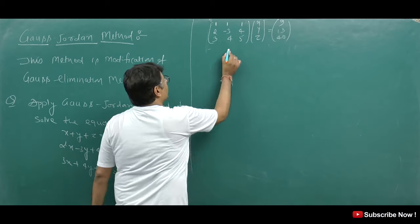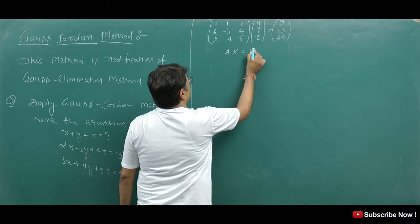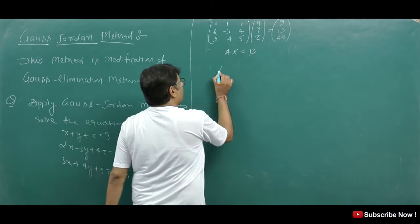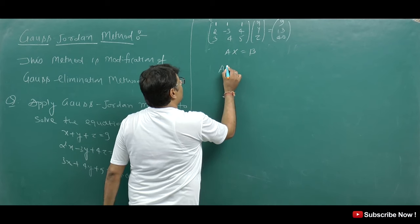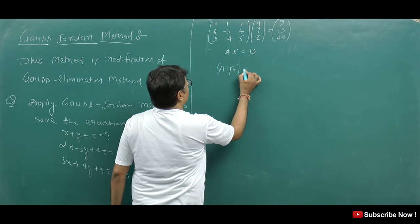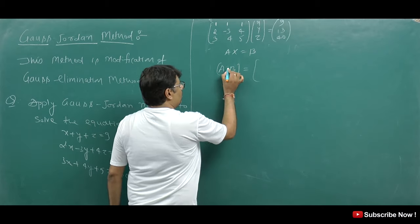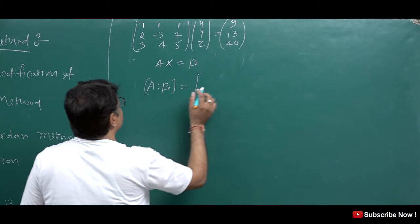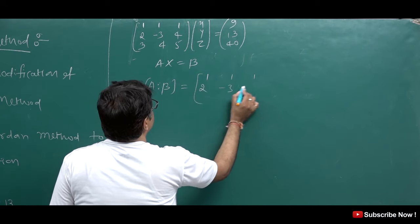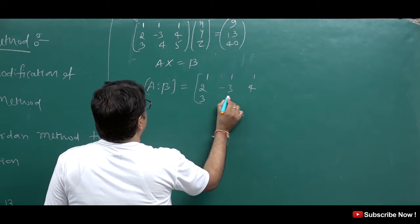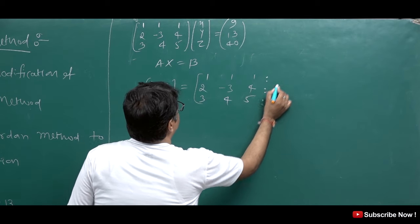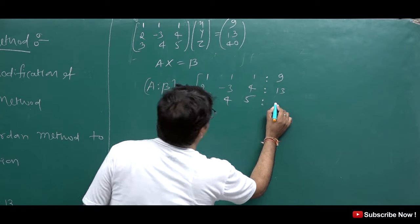We write this as AX = B and then form the augmented matrix A|B. So the matrix A|B is: first row 1, 1, 1, 9; second row 2, -3, 4, 13; and third row 3, 4, 5, 40.